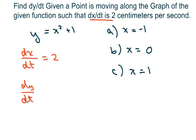So for the derivative of Y with respect to T, using the chain rule, the derivative of Y with respect to X is 2X, times the derivative of X with respect to T.